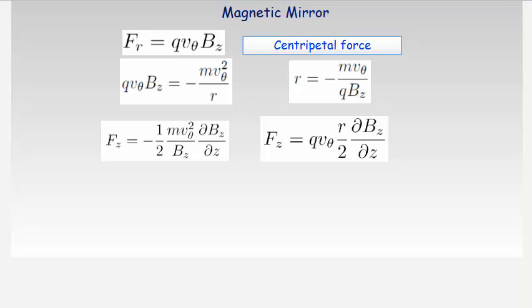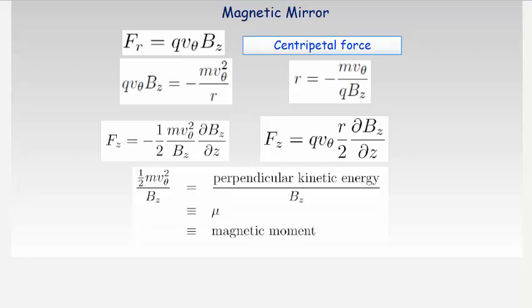Most importantly, the ratio of the kinetic energy and the magnetic field Bz is a quantity known as the magnetic moment, μ, of a circulating charge. It is from the properties of the magnetic moment that we will be able to derive the condition for charge reflection or transmission from the high magnetic field region.